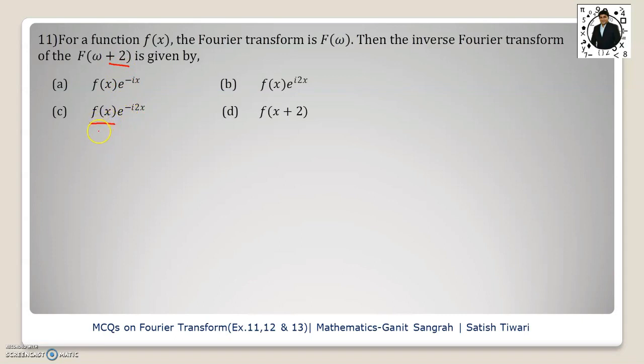What is that formula for shifting in omega? It is f of fx e to the power i omega x equals to f of omega minus omega 0. So, we are finding the inverse. If you use this formula for f of omega plus 2, option c will be the correct option.